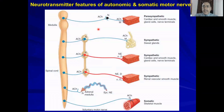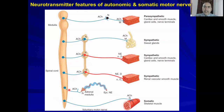This is a very important figure. Here is the CNS — brain and spinal cord. Any neuron coming out of the central nervous system will release acetylcholine at the end. This acetylcholine will act on nicotinic receptors. The neurotransmitter is acetylcholine and the receptor is nicotinic.